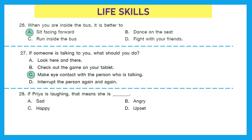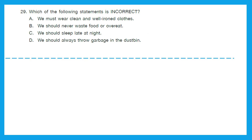Question 28: If Priya is laughing, that means she is? When does a person laugh? When the person is happy. Option C is the right answer. Question 29: Which of the following statements is incorrect? We must wear clean and well-ironed clothes — that's right. We must never waste food or overeat — that's right. We should sleep late at night — that's incorrect; it disturbs our sleep cycle and we will not get proper rest. So the answer is option C. Option D says we should always throw garbage in the dustbin — that is correct. So option C is our answer.